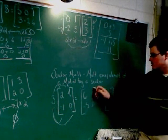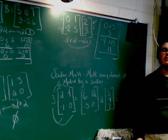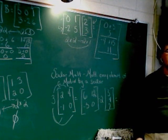And 3 times 0, which is 0. That's it. So we like scalar multiplication. It's a lot easier.